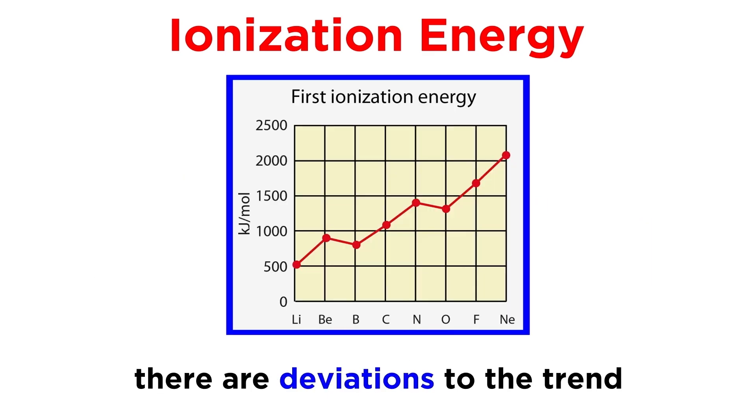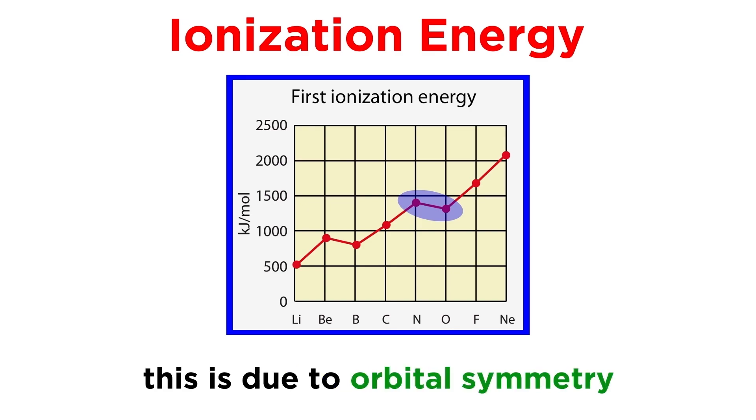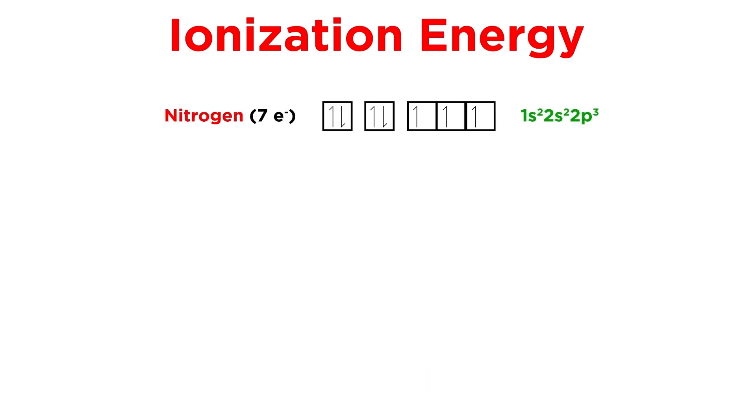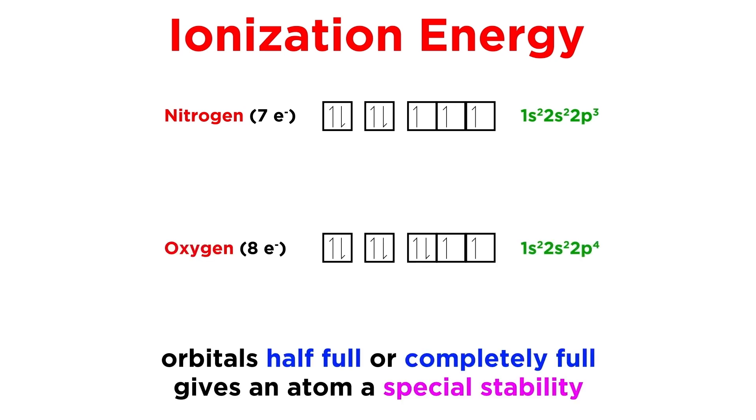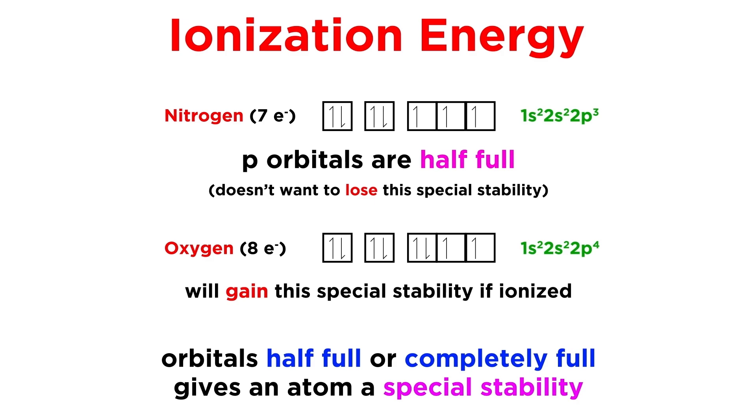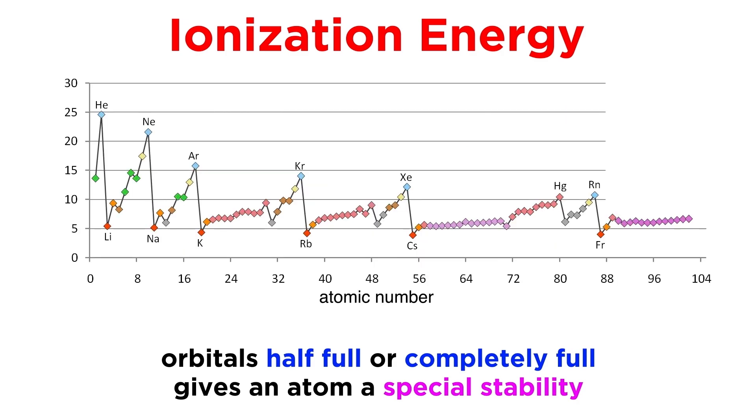There are some slight deviations to this trend, like the way oxygen is lower than nitrogen, and these deviations always have to do with orbital symmetry. Nitrogen's orbital diagram looks like this, while oxygen's looks like this. An atom will be most stable when its orbitals are either half-full or completely full, and since nitrogen has its p orbitals half-full in the ground state, it won't be as willing to lose an electron as oxygen will, which, once lost, will attain a half-full p subshell. There are deviations like this involving half-full subshells at various other spots on this diagram.